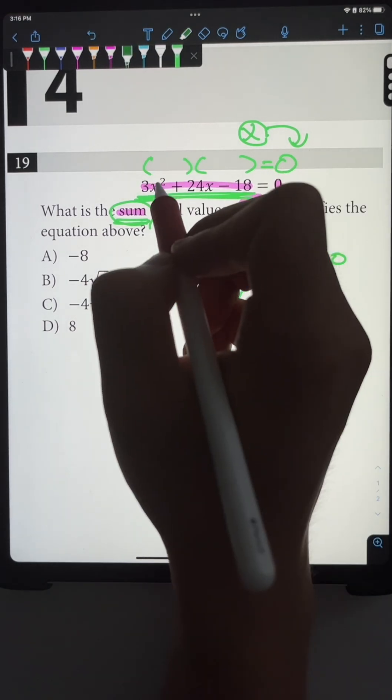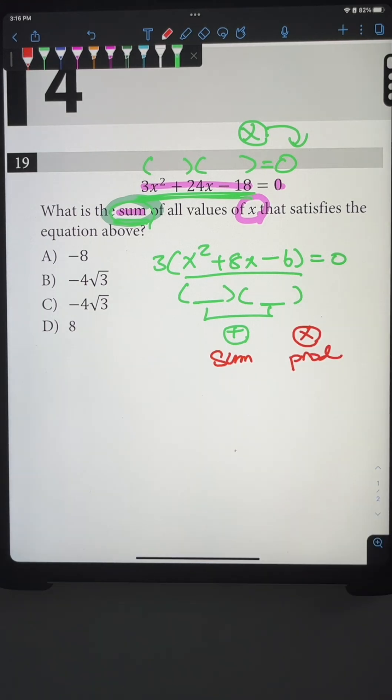Whenever you see a question that asks specifically for the sum or product of the roots, that's a sign that the equation is not going to be factorable. That's not how they want you to solve it. Instead, they want you to solve it using a very special formula.